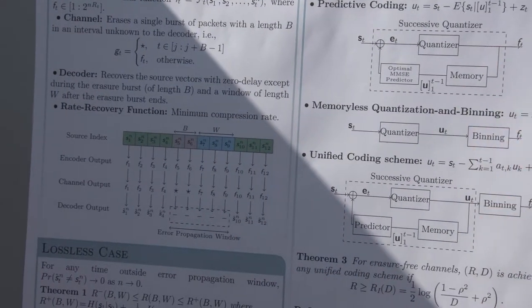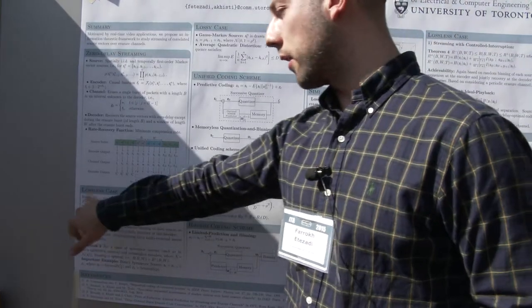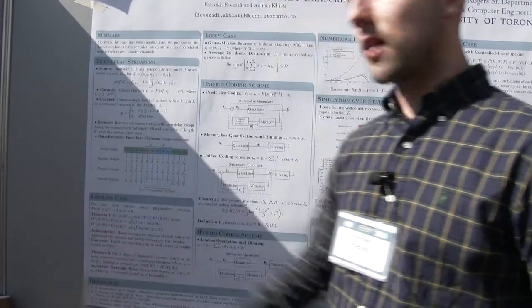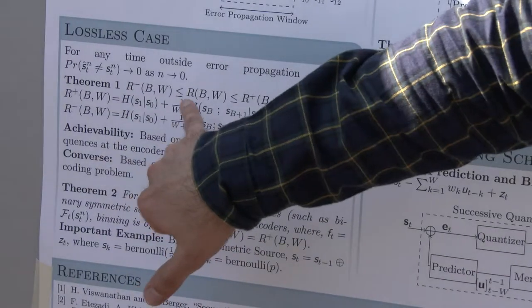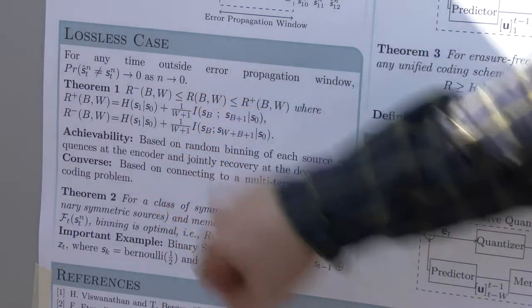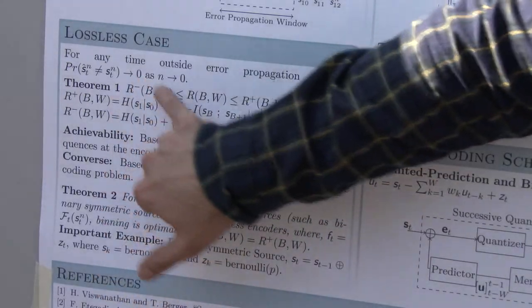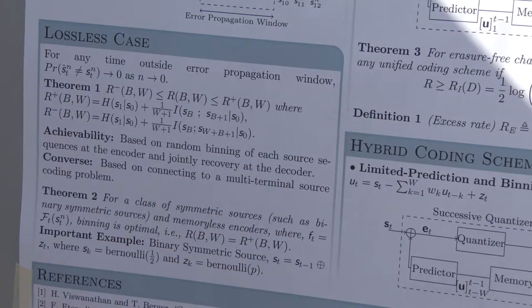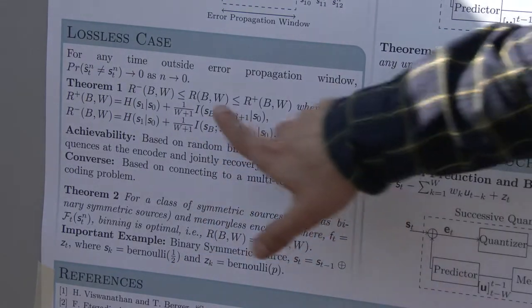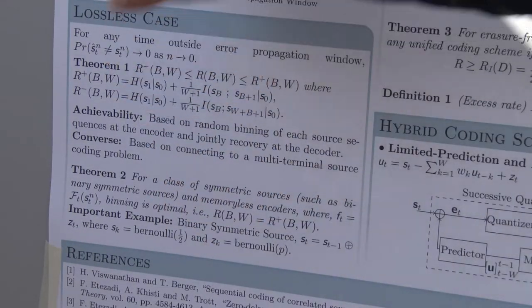We consider the lossless case and lossy case of this problem. For the lossless case, the recovery at the decoder is within zero delay, meaning that the probability that the recovered source is not exactly the same as the source approaches zero. We have this theorem that has a lower bound and upper bound for this rate recovery function, which is generally a function of b and w. We can see that the bounds consist of an entropy term, which is the rate required for transmitting the sources over the erasure-free ideal channel, and we also have this extra mutual information term scaled by a factor of 1 over w plus 1, which is the penalty we pay to compensate the effect of the erasure.